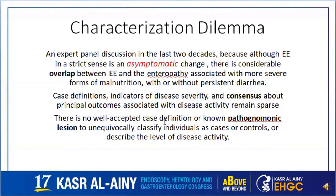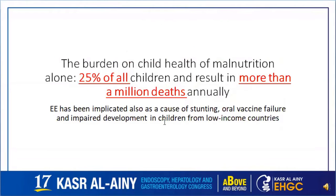Characterization of this disease has long been a dilemma because, although environmental entropathy in a strict sense is an asymptomatic change, there is considerable overlap with other entropathies associated with more severe forms of malnutrition with or without persistent diarrhea. Consensus about case definition and pathognomonic lesion remains sparse. Nevertheless, it is a disease with significant impact on child malnutrition and oral vaccine failure, especially in low-income countries.